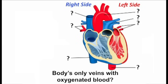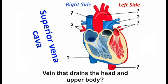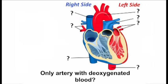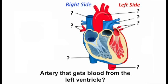Now try these questions. Body's only veins with oxygenated blood. Vein that drains the head and upper body. Only artery with deoxygenated blood. Artery that gets blood from the left ventricle.